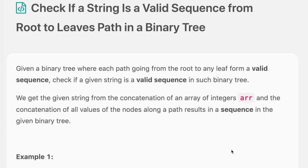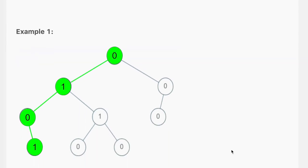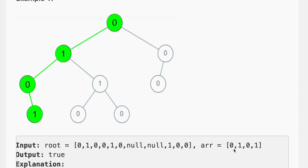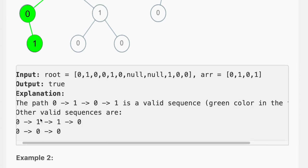We are given an example: the array is 0, 1, 0, 1. Starting from the root, we start at 0, then 1, then 0, then 1, and we reach the leaf. That means we simply return true.